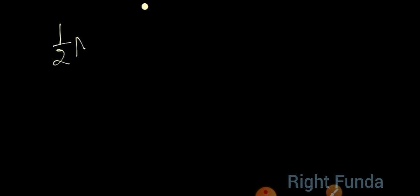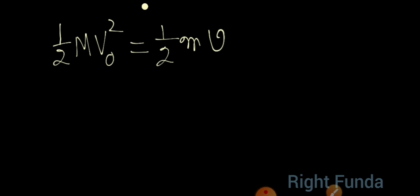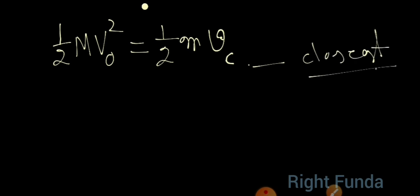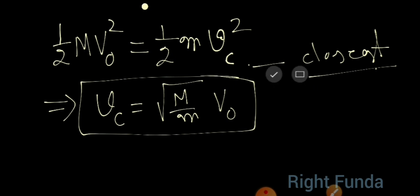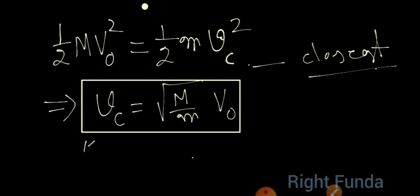Using energy conservation: ½MV₀² = ½mv_c², where v_c is the velocity of the ball when the block is at its closest distance. Solving gives v_c = √(M/m)·V₀. The problem now reduces to: when the ball's velocity equals v_c, what is the separation between the wall and the block?